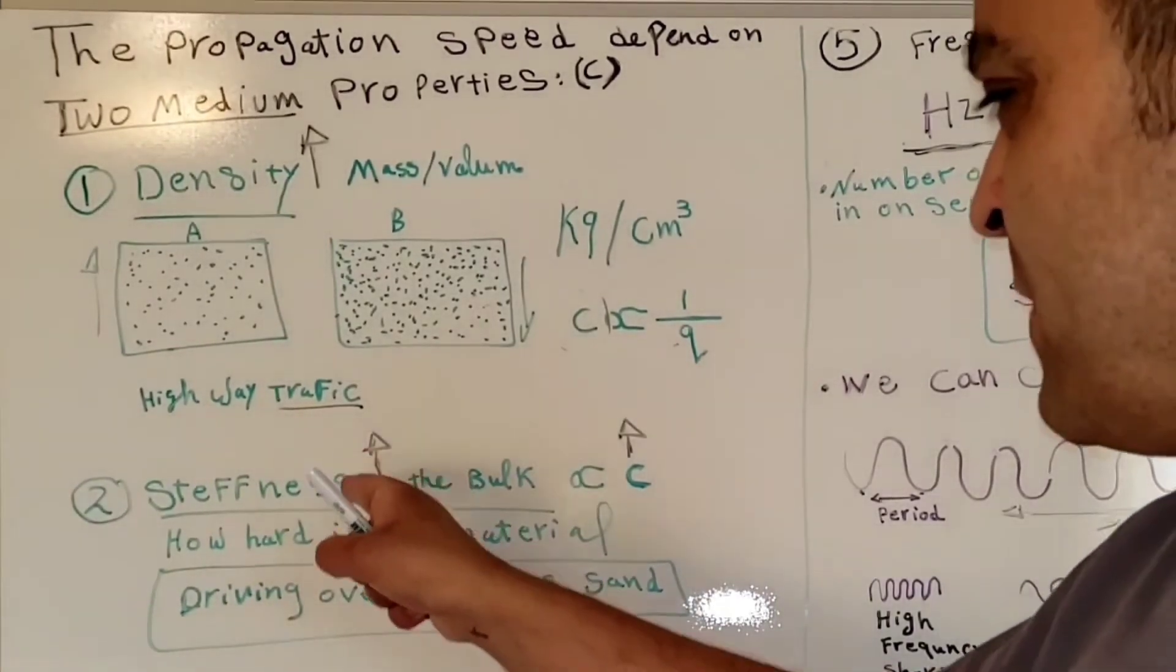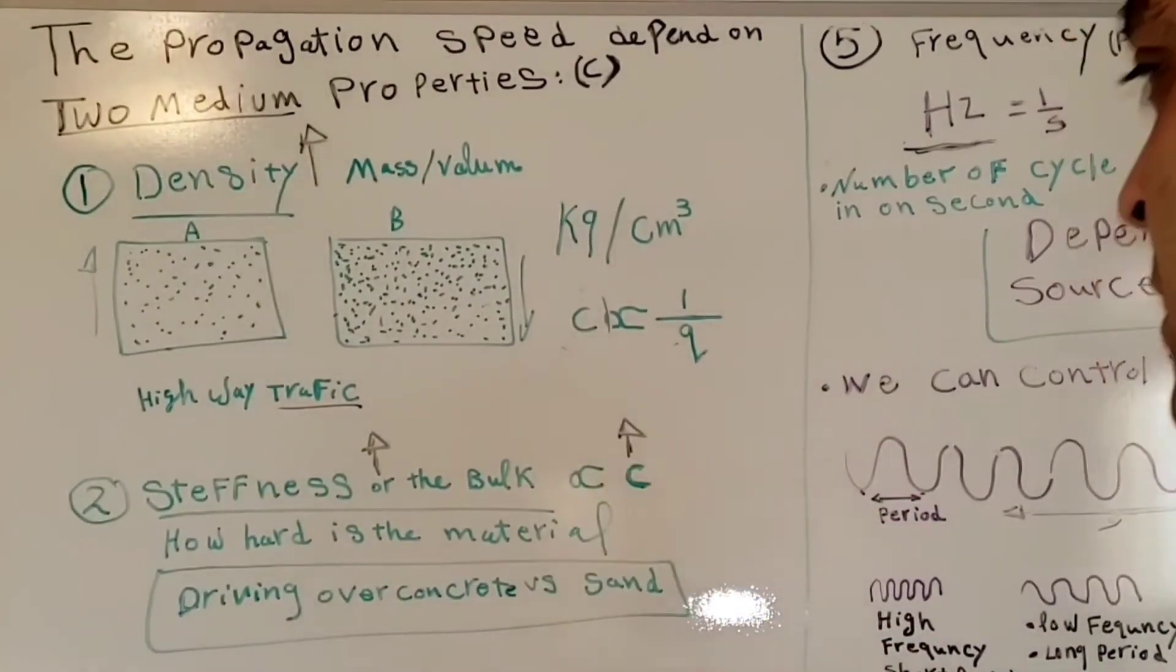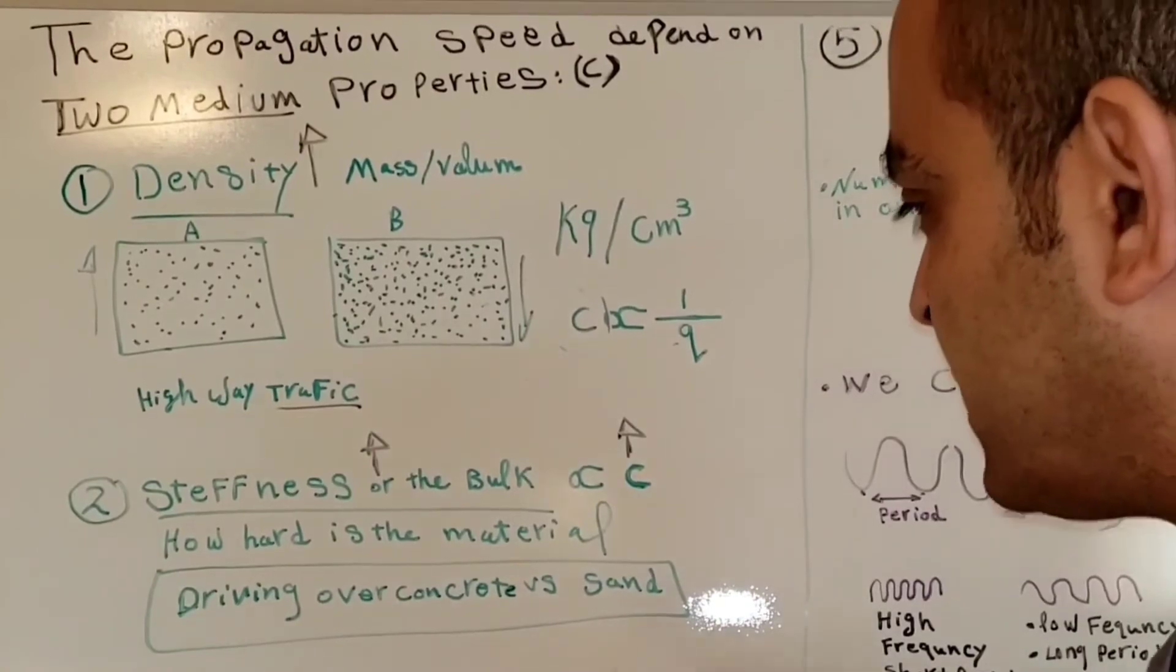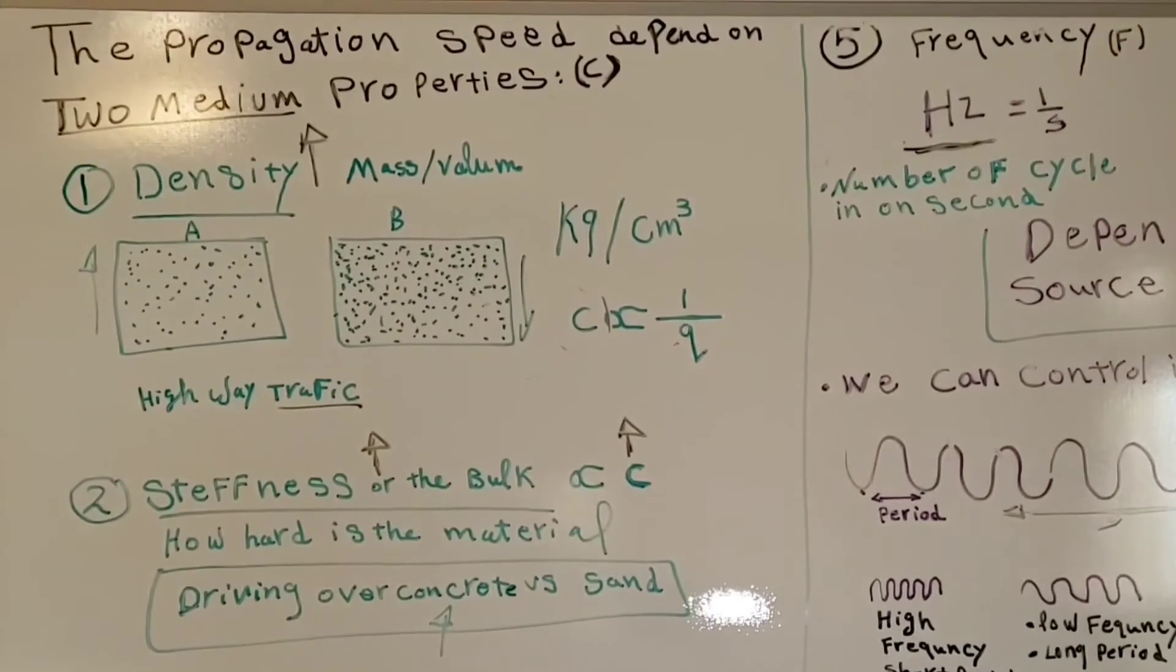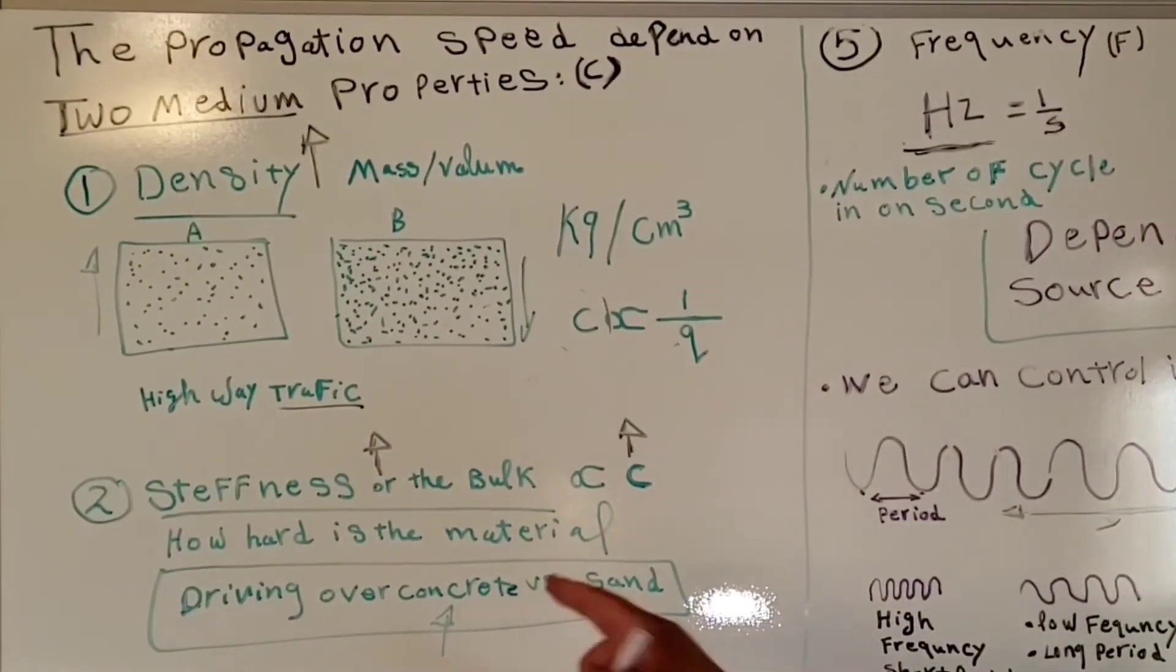That's why when stiffness increases, the speed limit or propagation speed increases. The propagation speed increases when you have more stiffness and decreases when you have less stiffness. The speed limit on concrete is higher than on sand.